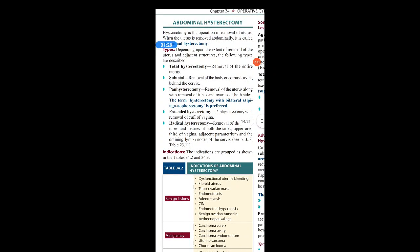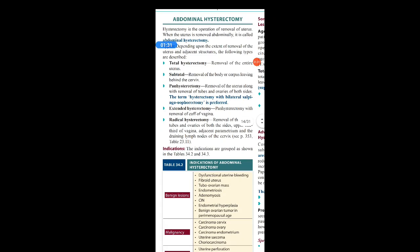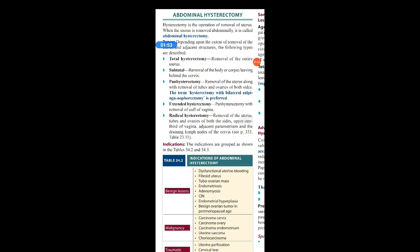Pan hysterectomy involves the removal of the uterus along with the tubes and ovaries of both sides. The uterus, tubes, and ovaries of both sides are removed. The preferred term in this case is hysterectomy with bilateral salpingo-oophorectomy, as we are removing both tubes and ovaries along with the uterus.